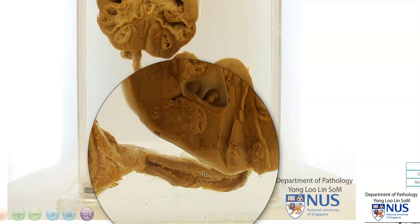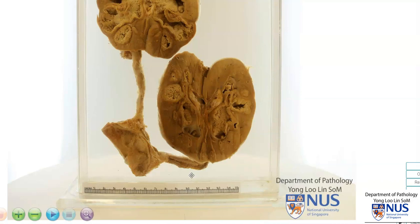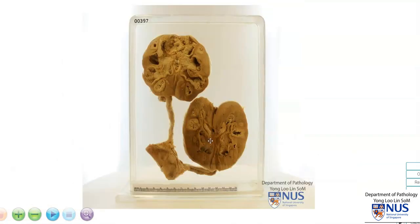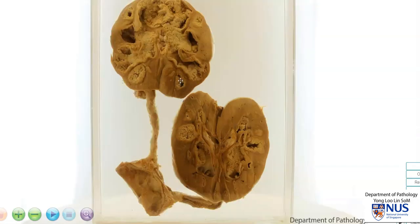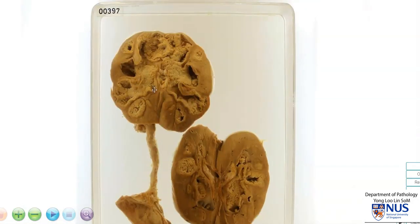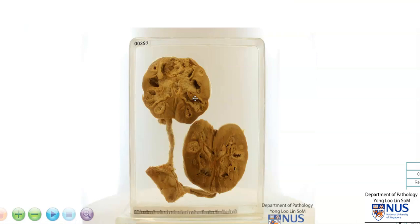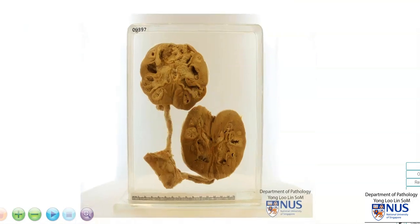If this leads to significant obstruction, there can also be hydronephrosis occurring secondary to urinary outflow obstruction. So here is an example of chronic pyelonephritis with the appearance of extensive caseous necrosis due to tuberculous pyelonephritis.